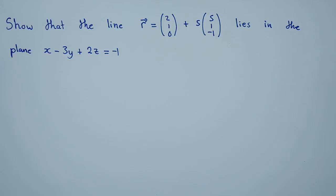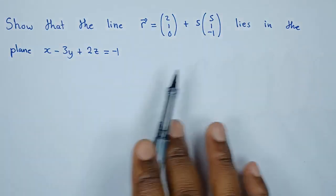Hello everyone, we have this question under vectors. Let's see how we can break it down. The question reads: show that the line in vector form lies in the plane.